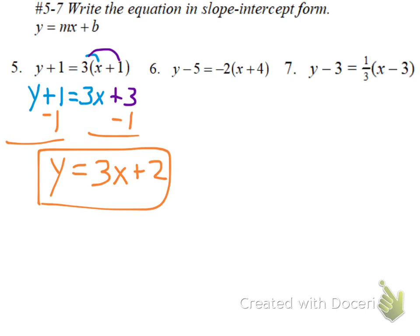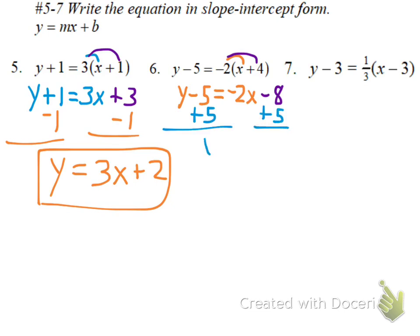Same idea on the next one. We've got to get rid of our parentheses and then get y by itself. Negative 2 times x is negative 2x. Negative 2 times 4 is negative 8. Now, to get rid of the minus 5 and get y by itself, add 5 to each side. Treat that as negative 8 plus 5, and you'll get negative 3.